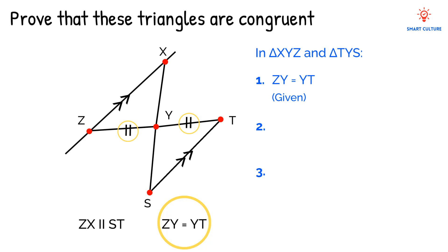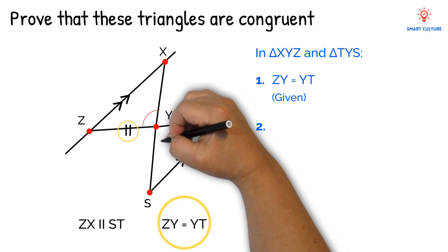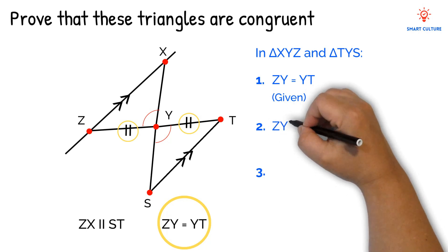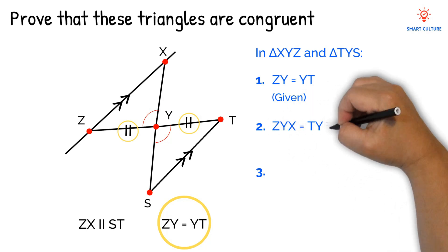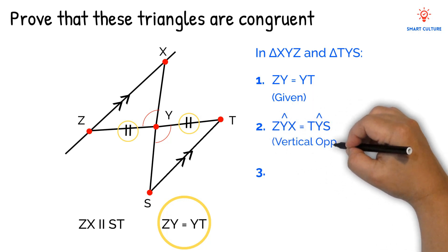If we look at angle ZYX and angle TYS, they are opposite angles. Therefore, they are equal. So our second statement would be that angle ZYX equals angle TYS. And the reason is that vertical opposite angles are equal.